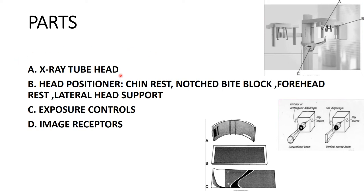The head positioner is where the patient places their head. It has: a chin rest where the patient rests their chin; a notched bite block where the patient bites; a forehead rest; and a lateral head support. The exposure control allows milliampere and kilovoltage settings to be adjusted, while the exposure time is fixed and cannot be changed on an OPG machine.